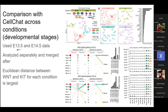The example in the CellChat paper is a comparison of embryonic data collected at 13.5 days versus 14.5 days. Apparently a lot of differences happen in just one day for a mouse embryo. To compare conditions, you separate your data, input disease data and healthy data as separate objects into CellChat, run CellChat analysis separately for each, then join them up and use built-in functions for comparison.